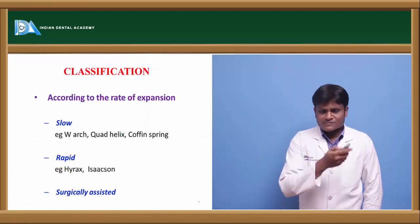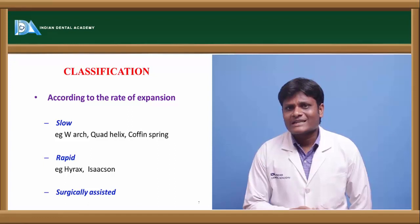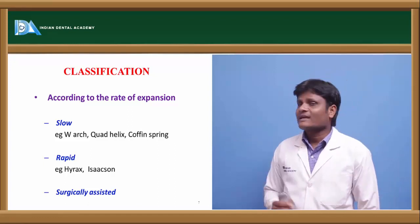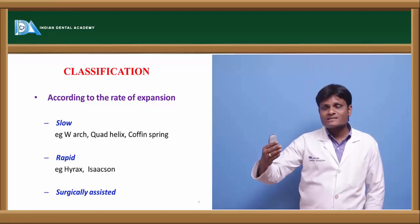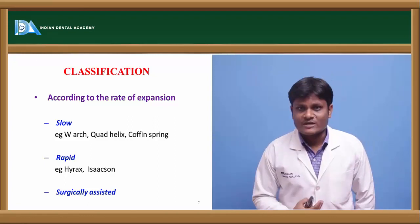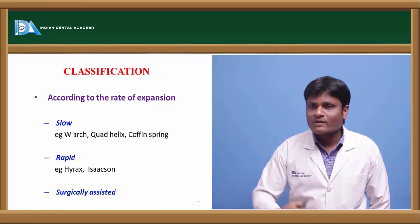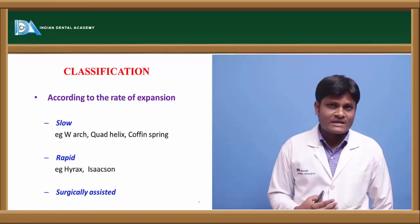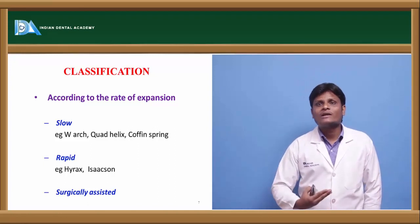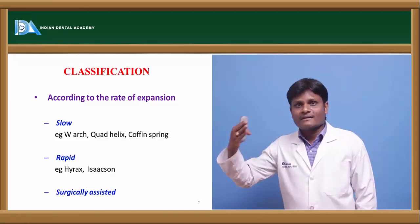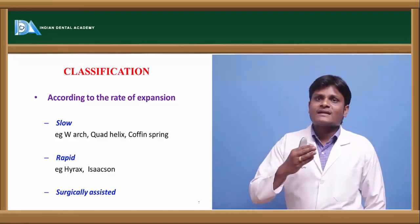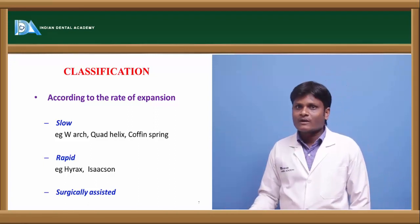When speaking about expansion, we need to understand that expansion can be classified into slow expansion and rapid expansion depending upon the speed of expansion. There is also an entity called surgically assisted expansion — also part of rapid maxillary expansion — usually called surgically assisted rapid maxillary expansion (SARME) or surgically assisted rapid palatal expansion.